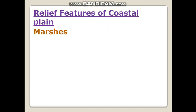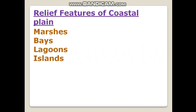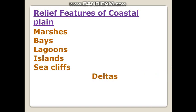Now we will see what are the relief features of the coastal plain. Marshes, bays, lagoons, islands, sea cliffs, deltas, and points — they are the features of the coastal plain.